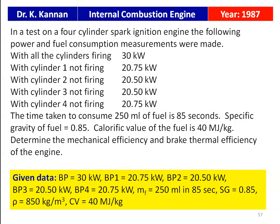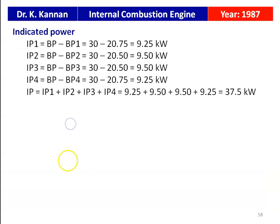Mass of fuel: 250 ml consumed in 85 seconds. Density of fuel = 0.85 × 1000 = 850 kg/m³. IP1 = 30 − 20.75 = 9.25 kW, IP2 = 30 − 20.5 = 9.5 kW, IP3 = 30 − 20.5 = 9.5 kW, IP4 = 30 − 20.75 = 9.25 kW. Total indicated power = 9.25 + 9.5 + 9.5 + 9.25 = 37.5 kilowatts.